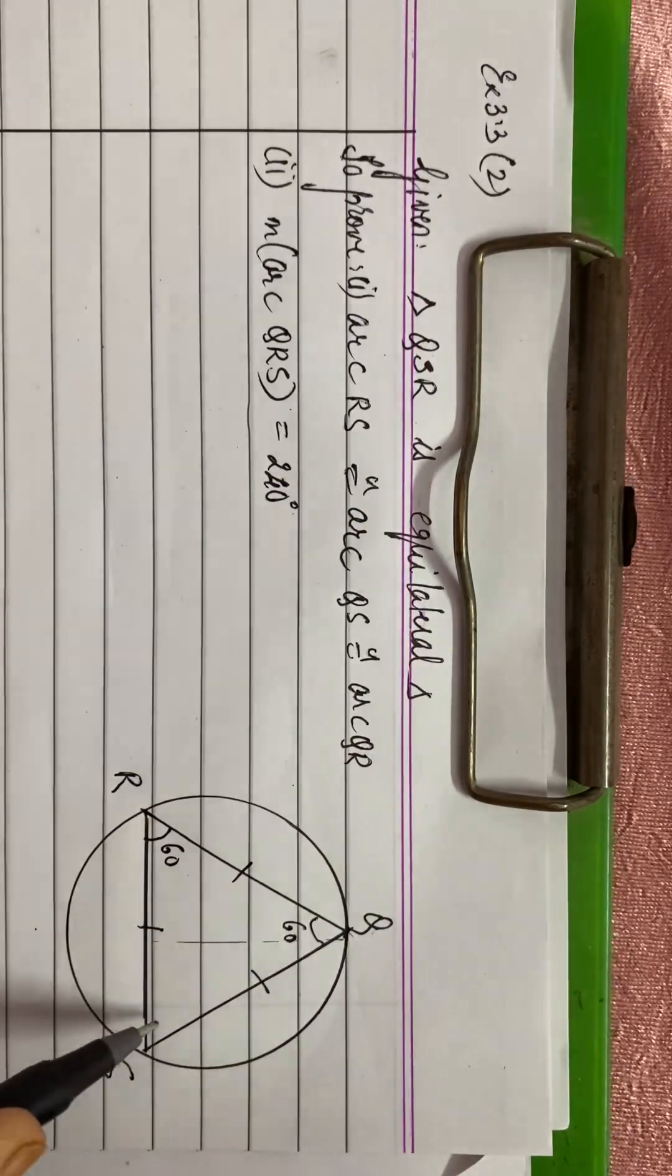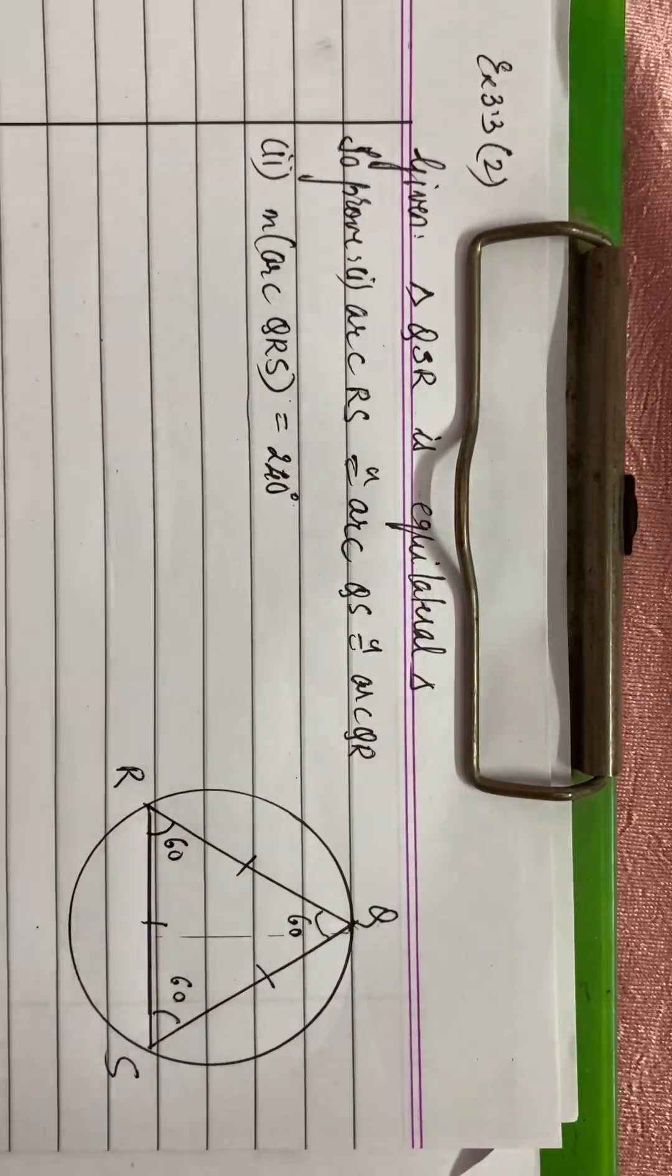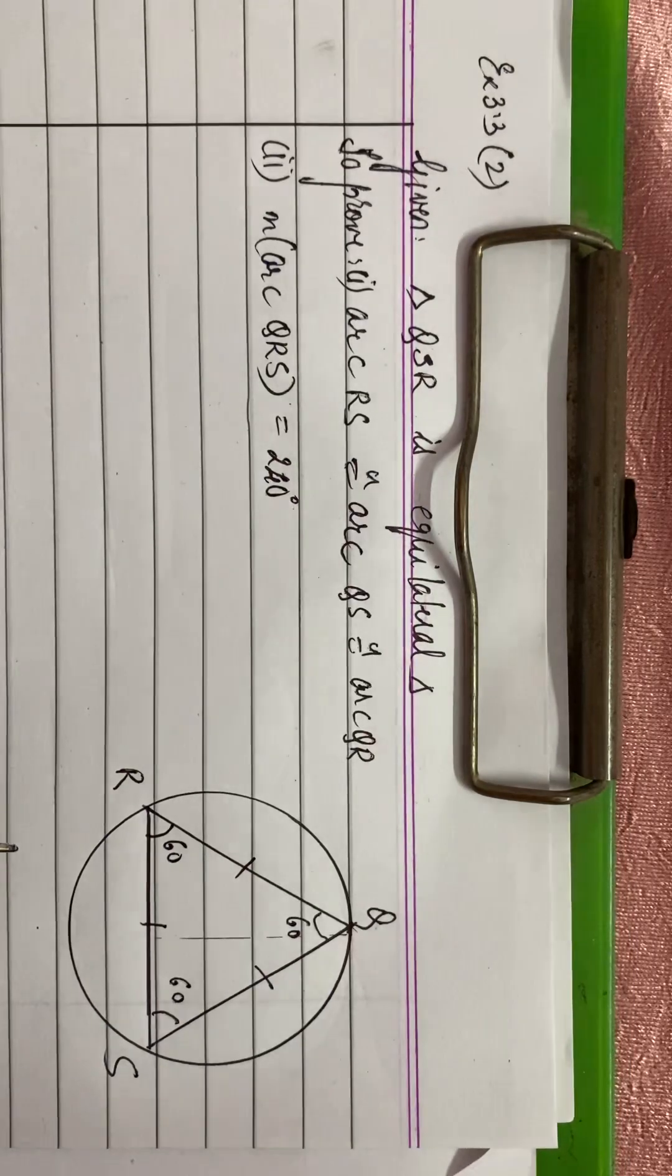We are given that it is an equilateral triangle. So an equilateral triangle is equiangular also. So each angle will be 60 degrees.